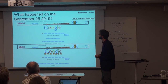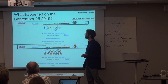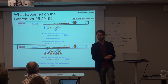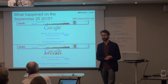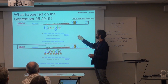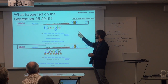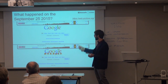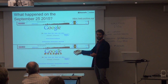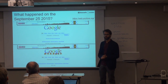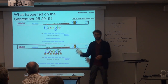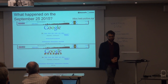Do you know what happened to Google on September 25, 2015? Can you spot the difference? This is September 24, 2005 and this is two days later. Something is different, apart from the cake which is the birthday of Google.